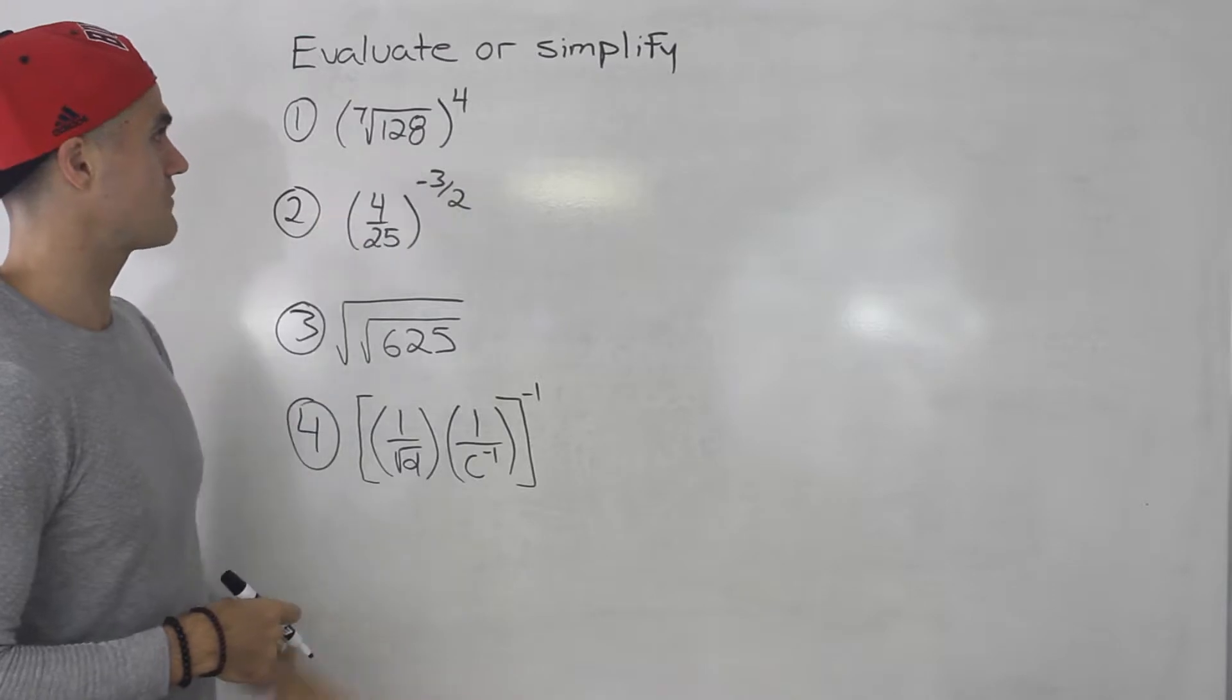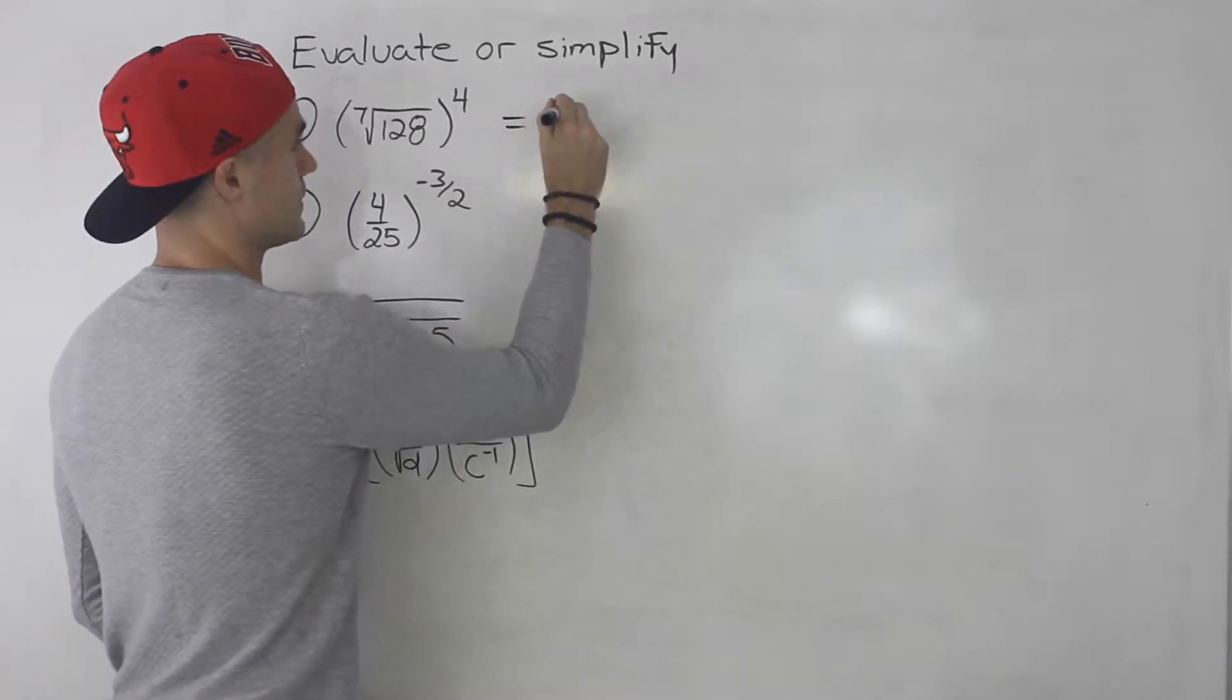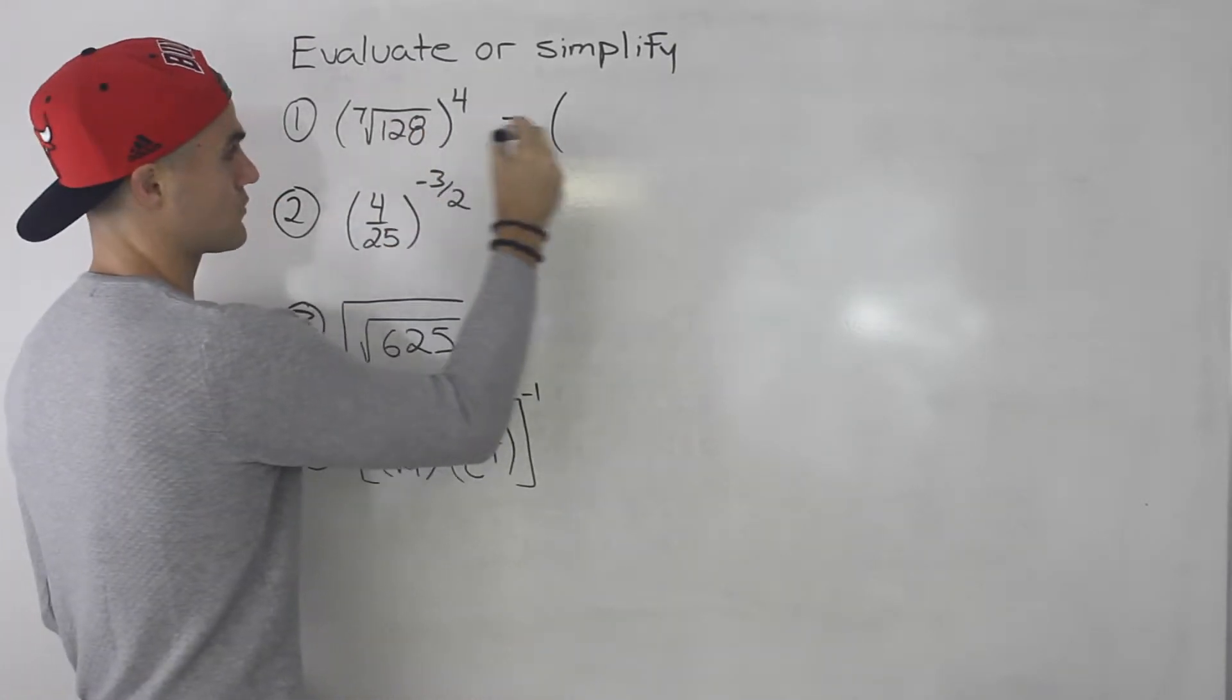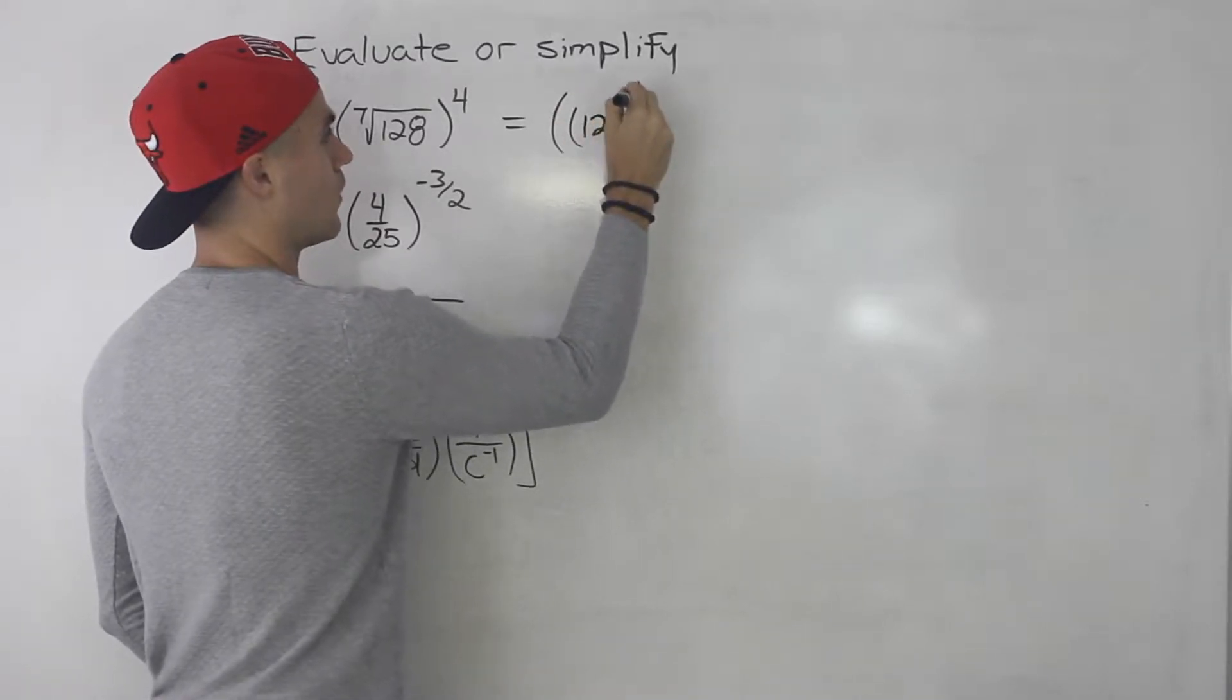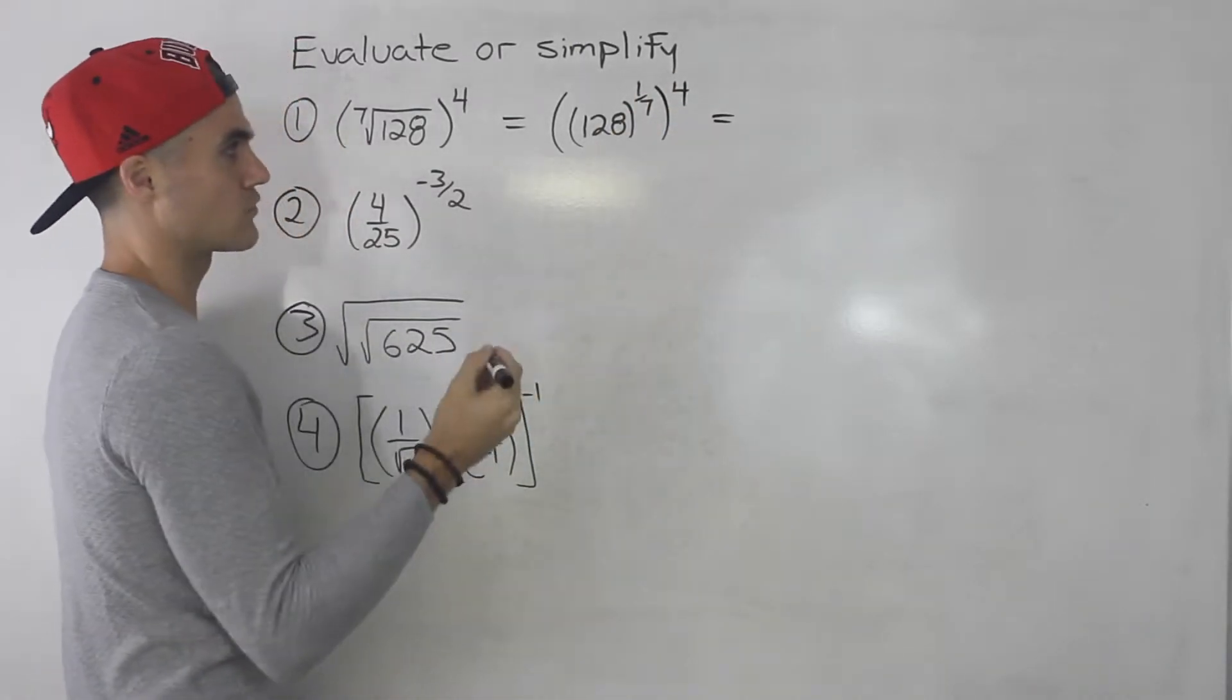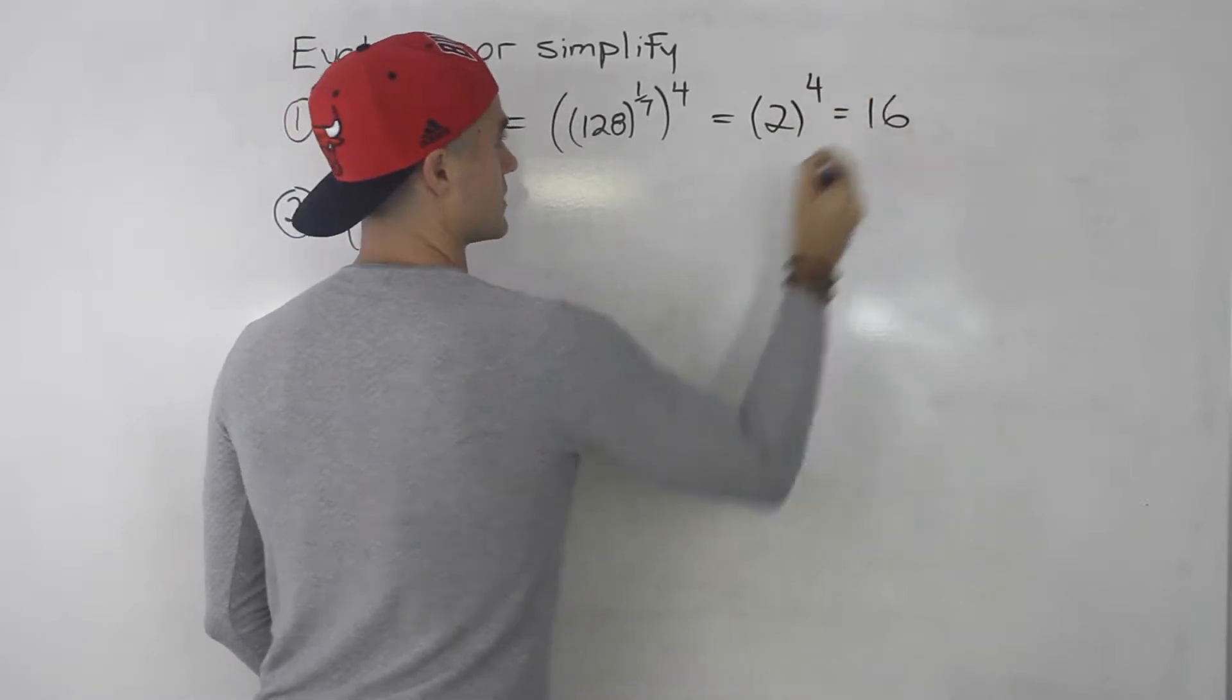Here we've got the seventh root of 128 all to the power of 4. What I'm going to do is actually try to put this as a rational exponent. The seventh root of 128, we can rewrite that as 128 to the power of 1 over 7, and then all of that's going to be to the power of 4. And then 128 to the power of 1 over 7, or the seventh root of 128 is 2, and then 2 to the power of 4 is just simply 16.